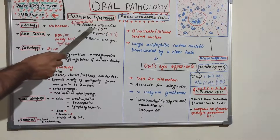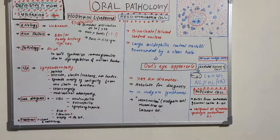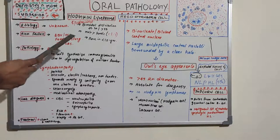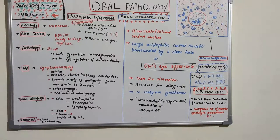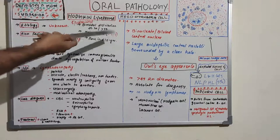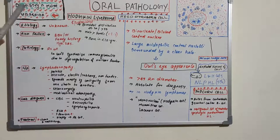The two peak age groups are 25–30 years and greater than 55 years. As a comparison, dental caries is also bimodally distributed, being common among teenagers and older adults. Regarding gender, there is a slight male predilection at roughly 1.1:1. The disease is very rare in children under 10 years of age.